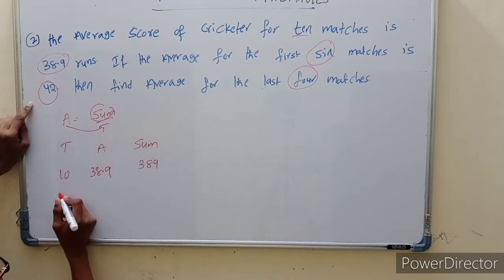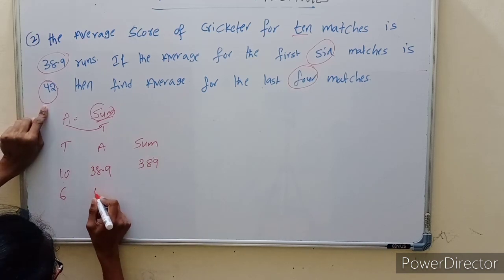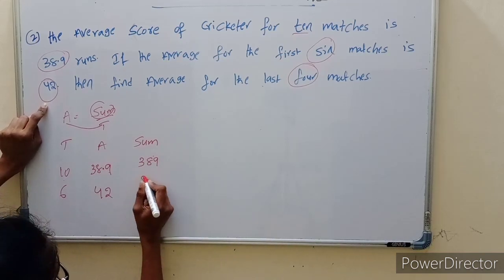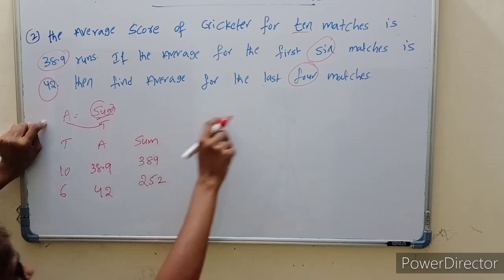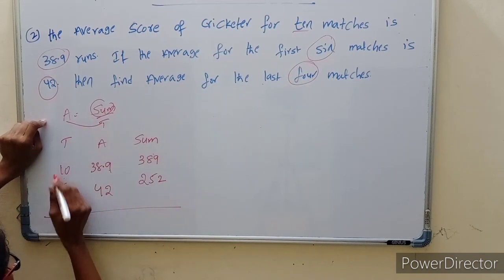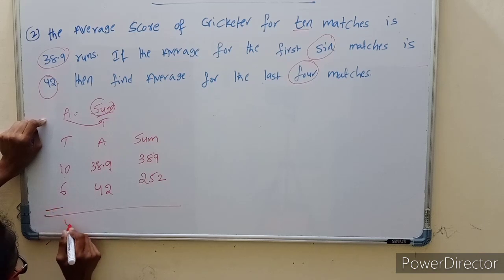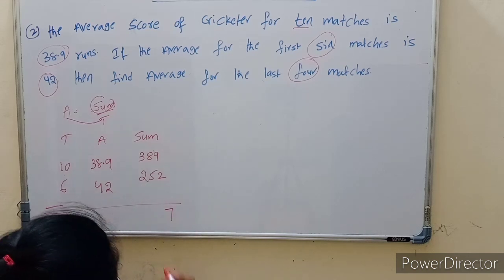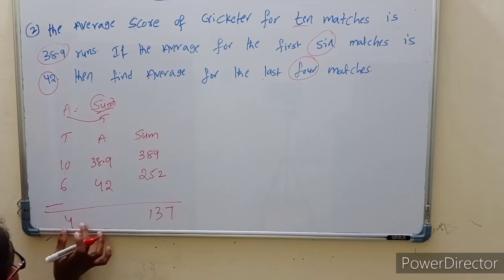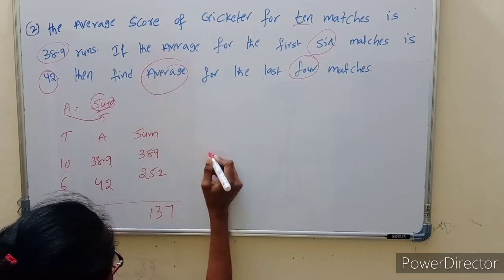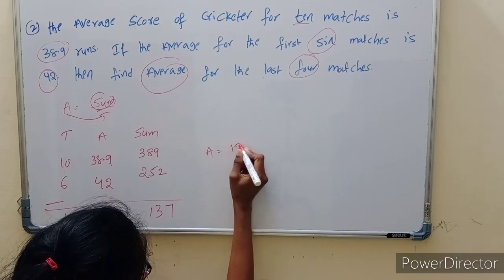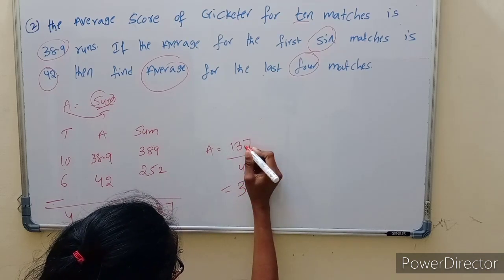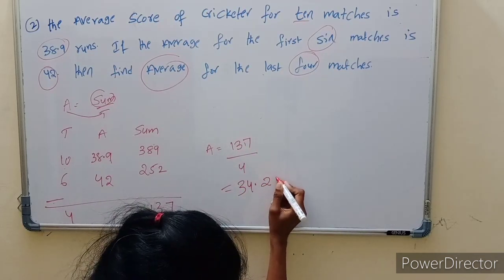Sum for first 6 matches: average into total, so 42 into 6 equals 252. Remaining 4 matches sum equals total sum minus first 6 sum: 389 minus 252 equals 137. Average of last 4 matches equals sum by total: 137 divided by 4 equals 34.25.